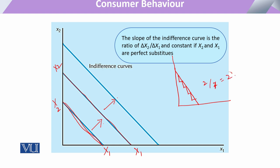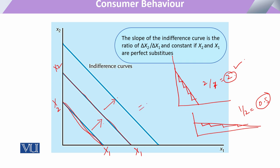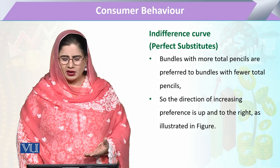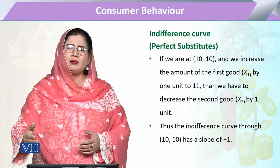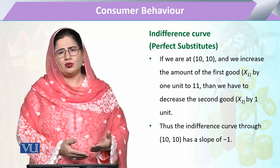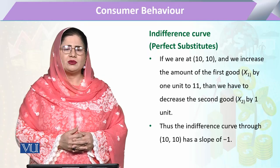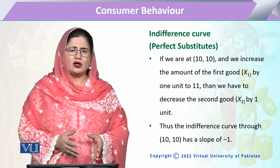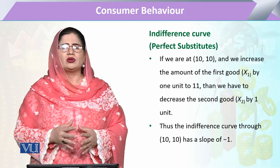Similarly, we can also have a flatter form of the indifference curve. The rate of change can be 2 to 1, or 1 divided by 2 — that is 0.5. So it can be 0.5, it can be 2, it can be 1 — whatever the factor is. But as long as that rate remains constant, we say they are perfect substitutes to each other. Whatever the perfect substitute, the indifference curve will always be a straight line for the consumer, having a constant rate of substitution throughout the indifference curve.